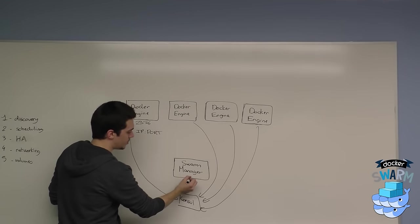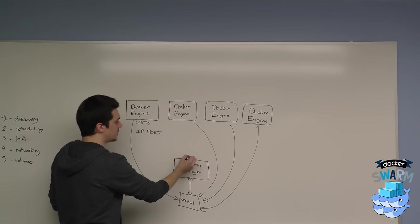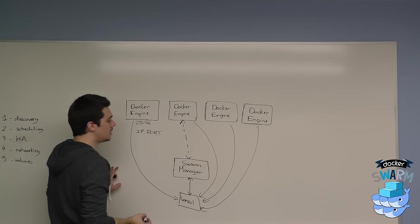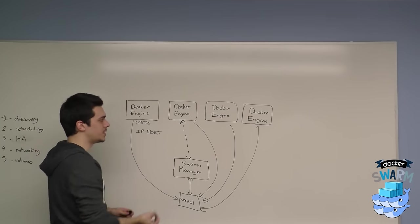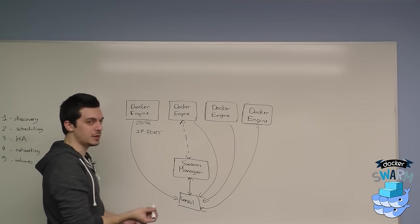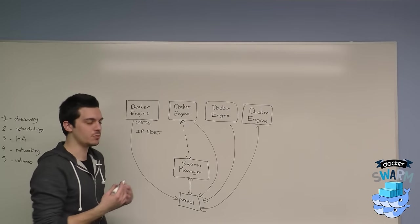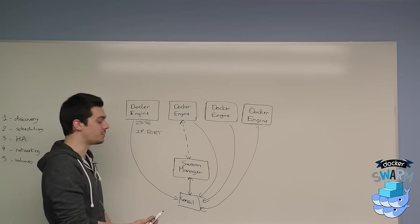And then the swarm manager retrieves the state back from the store and uses it to connect to the remote docker engines. At this point, it will sync up the state, try to validate the docker engine, which is at the pending state. When it's done and it's validated, you get back all the states with the containers running, the resources available, etc. So you can actually have a functioning cluster.